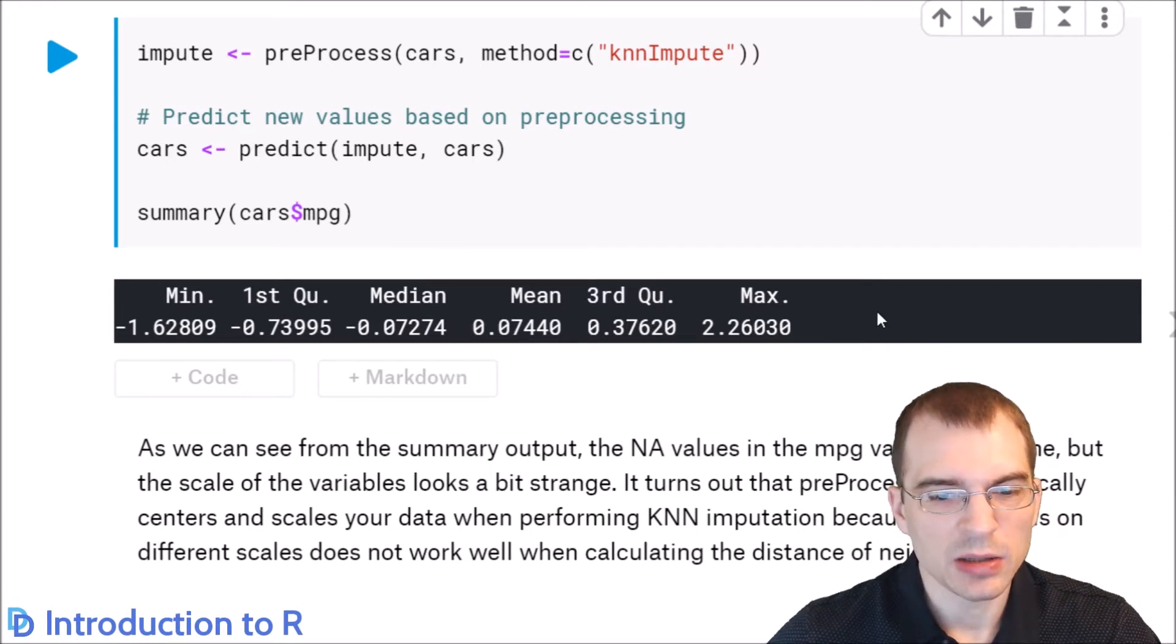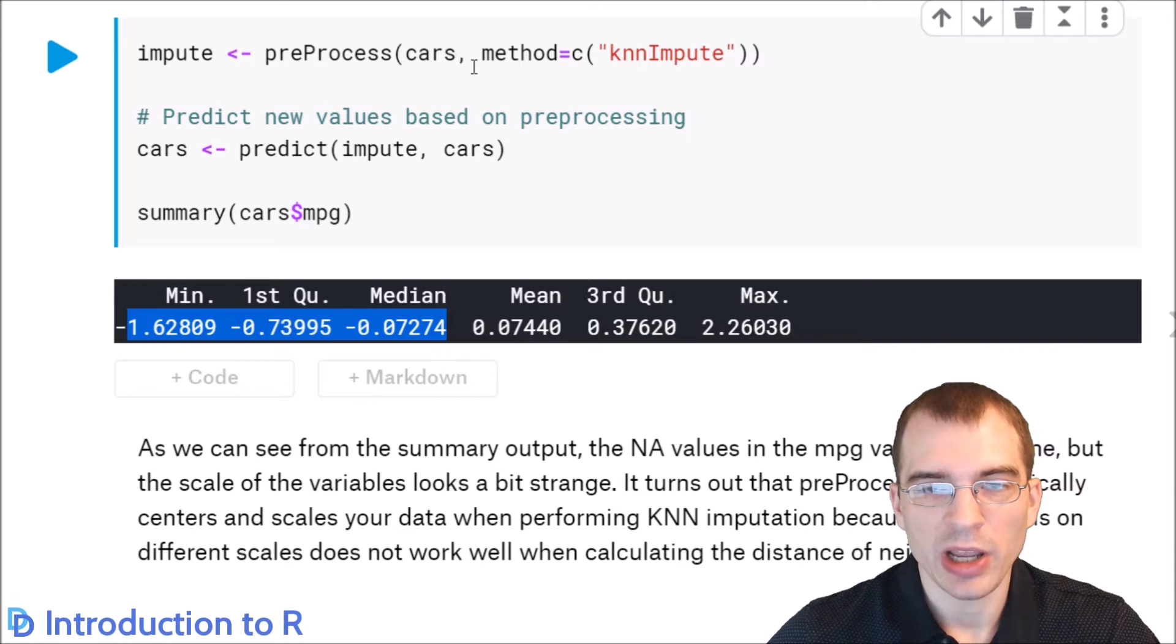But also, the scale of the values looks a bit off. We notice that, for instance, there are negative values here. And in miles per gallon, there's no such thing as a negative value. So what actually happened was the preprocess ran center and scale on it, even though we didn't explicitly pass those in. Because for doing knn-imputation, you need the data to be centered and scaled before you run that. So if we want to see what the actual imputed values were on the original scale, we're going to have to convert those back.